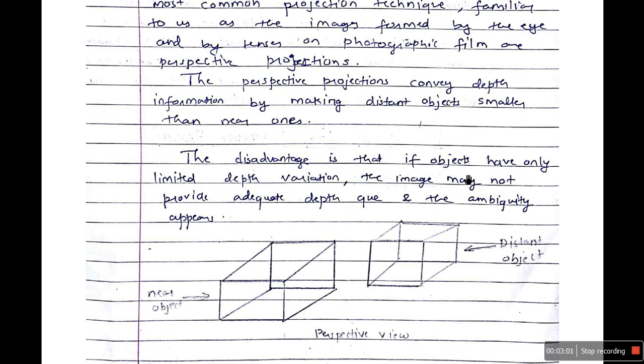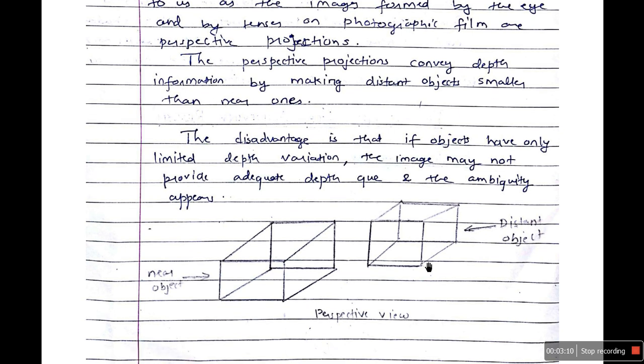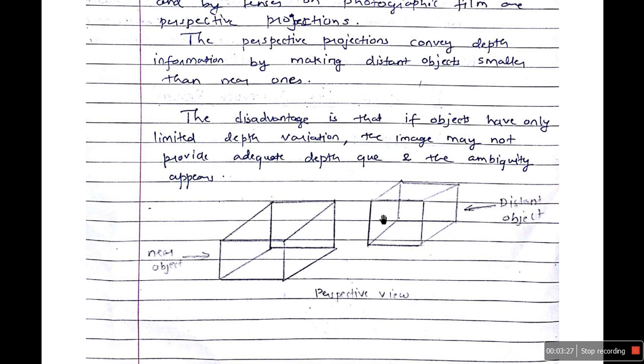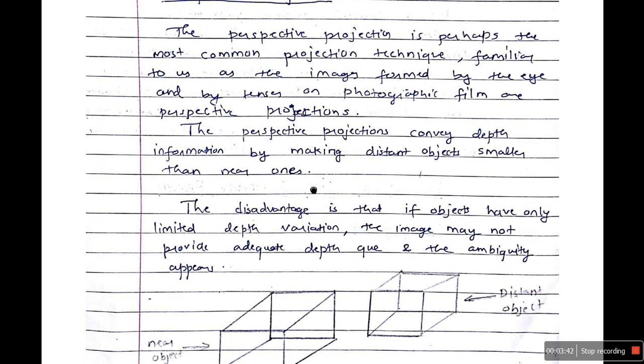The disadvantage of this is if objects have only limited depth variation, the image may not provide adequate depth information and ambiguity appears. For example, let's say there are 10 glasses but they have very small difference in their depth, or difference between their distance at which they are kept from the viewing point, then it won't provide enough information about the image. If these two objects are same, of same size, but this one is kept near the viewer and this one is kept at a distance, that's why this object looks bigger than the second object. This is perspective view or perspective projection.